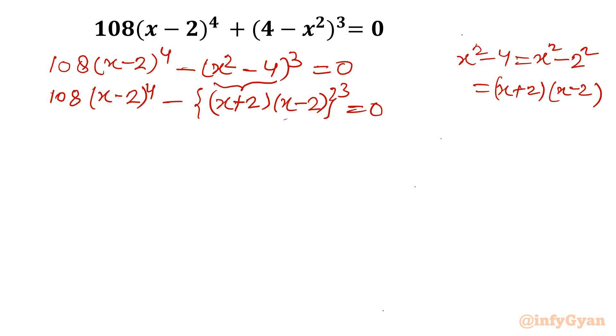Now (x-2)³ I can see is common. So (x-2)³ I will take common out. What is left? 108(x-2) minus (x+2)³ equals 0.